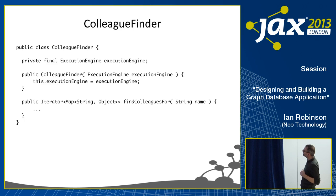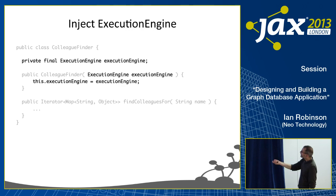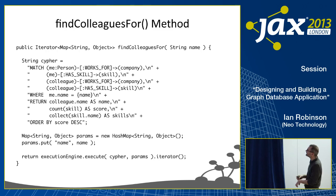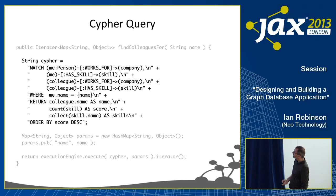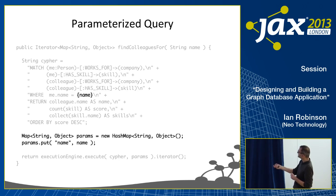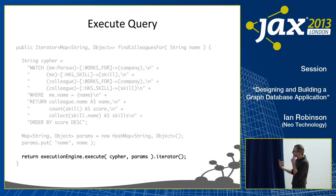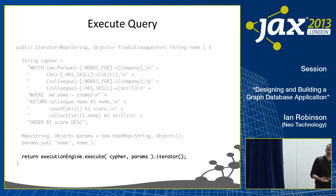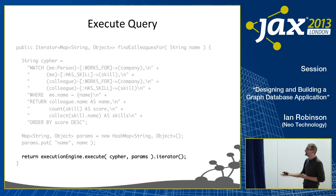Then I write the object under test — create my ColleagueFinder. In the constructor, we pass in the CypherExecutionEngine and store it as a member variable. In the findColleagues method, that's the Cypher query we looked at earlier — a parameterized query. All I'm doing is supplying a value for the parameter. If we passed in the value 'Ian', we put that into the map and it gets passed into the query when we execute it. We use the execution engine to execute the Cypher query and pass in the parameters, then pass back an iterator over the results. A very simple unit test that effectively tests that first query and asserts I'm getting the correct results back, using an in-memory graph database that can start and stop very quickly.